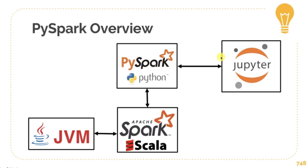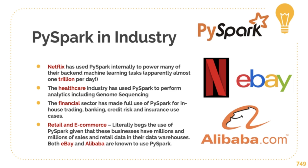This is a look at the PySpark overview. We have PySpark running in Python here in our Jupyter notebook, and through PySpark we access the Apache Scala code that runs within a Java Virtual Machine. This is how we access PySpark functions within Python seamlessly. As for how popular PySpark is in industry, companies like Netflix, eBay, Alibaba, and many others are using PySpark. The healthcare industry is beginning to use PySpark for genome sequencing, proving to be very effective. The financial sector has made significant use of PySpark for building trading platforms, and retail, e-commerce, and big credit card companies would also be using PySpark.